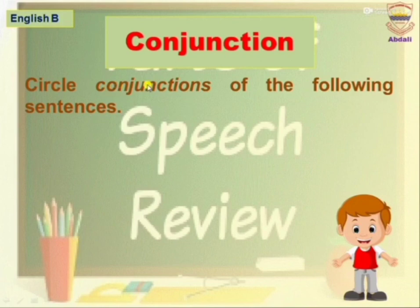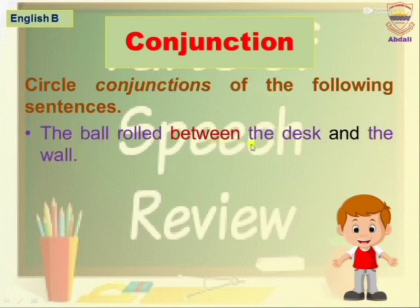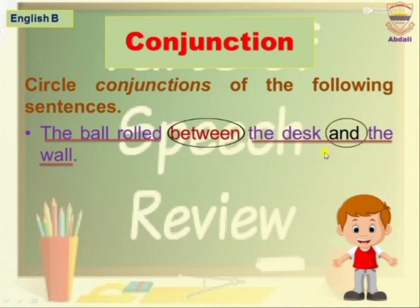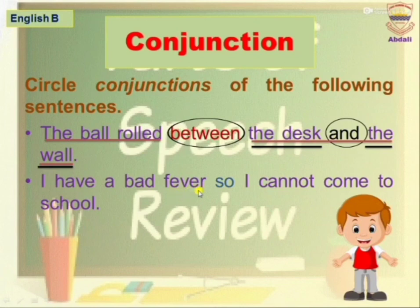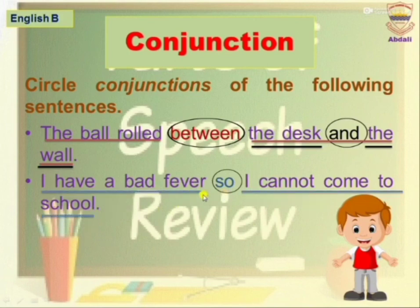Circle the conjunctions in the following sentences. The ball rolled between the decks and the wall. In this sentence, between is a conjunction which joins two clauses, and and is also a conjunction which joins two things. I have a bad fever, so I cannot come to school. In this sentence, so is a conjunction which joins two sentences.